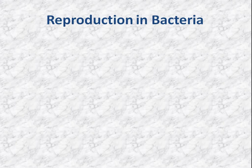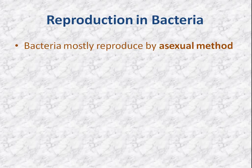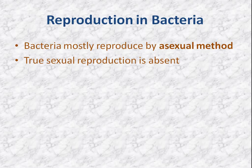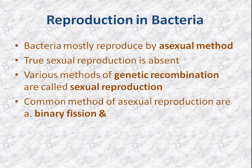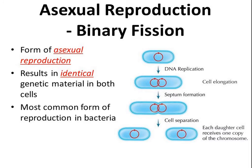Now reproduction in bacteria. Bacteria mostly reproduce by asexual methods. True sexual reproduction is absent, but there are various methods of genetic recombination in bacteria, which are called sexual reproduction. Asexual reproduction — the common method — is of two types: binary fission and budding. Binary fission is the type of asexual reproduction in which identical copies of the bacterial cell are produced, and it is the most common form of reproduction in bacteria.